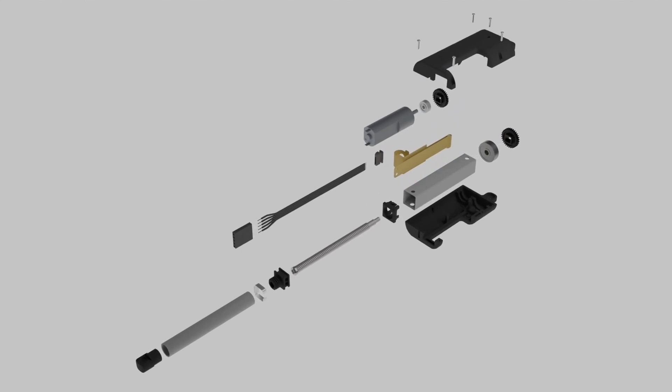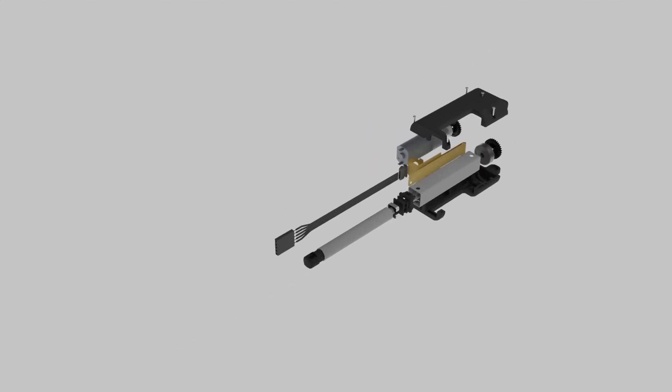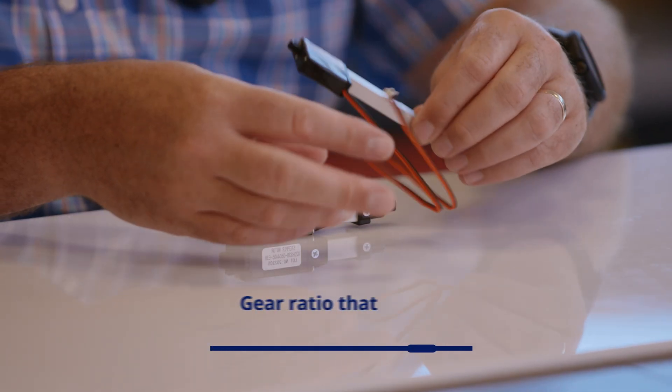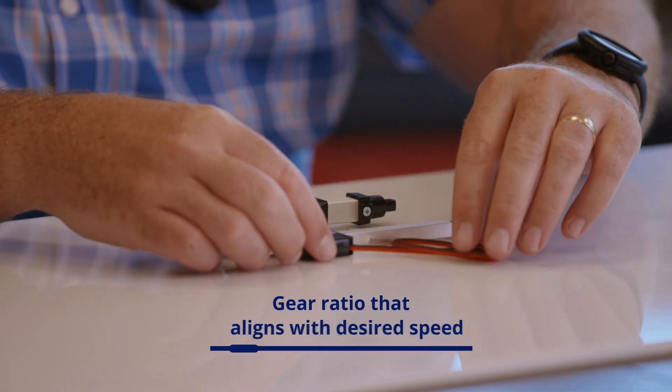First off, let's talk about gear ratio. We have many different gear ratio options across our product line, and the best starting point is to select an actuator with a gear ratio that closely aligns with your speed requirements off the shelf.